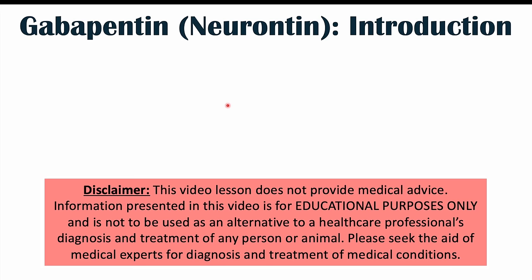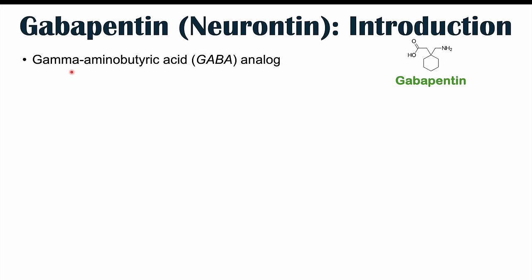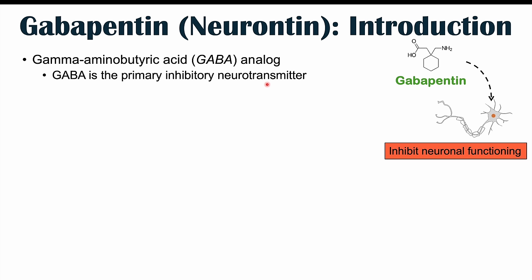Hi everyone. This lesson is on weird or atypical side effects of gabapentin, which is also known as Neurontin. Before we talk about those weird side effects, let's talk about gabapentin and how it works. Gabapentin is a gamma-aminobutyric acid, or GABA analog, and GABA is the primary inhibitory neurotransmitter. It essentially works like GABA and ultimately leads to generalized inhibition of neuronal functioning.